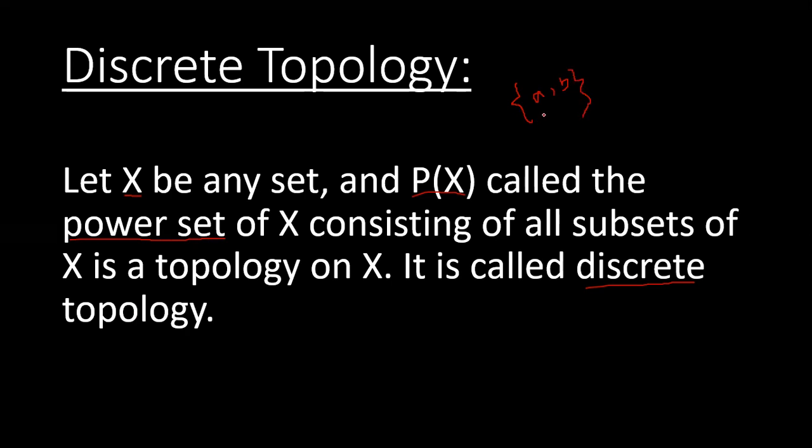φ, X, singleton {a}, singleton {b}, and {a, b}, the whole set. You can verify that all the axioms of topology are satisfied, and this kind of topology is called discrete topology.